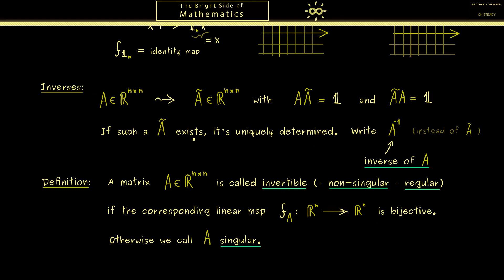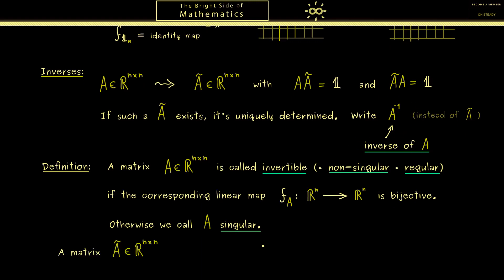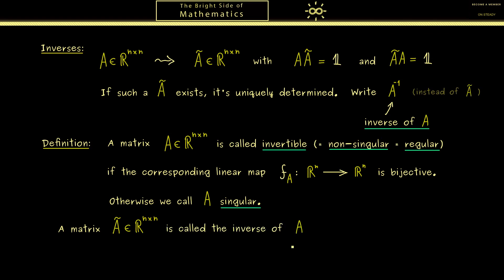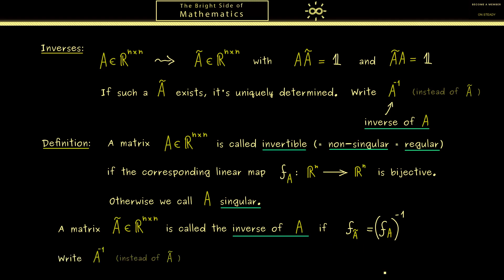By also using the map level we can define this inverse of A. A matrix A-tilde — also a square matrix of the same size — is called the inverse of A if the induced map of A-tilde is the inverse of FA. So we can formulate the whole definition just by using linear maps, but you need to know the nice correspondence between matrices and linear maps. A bijective map FA has an inverse we can denote by F to the power minus 1, and this inverse should coincide with the induced map of A-tilde. Then A-tilde is uniquely determined, which means we can write A to the power minus 1 for this uniquely determined inverse of A.